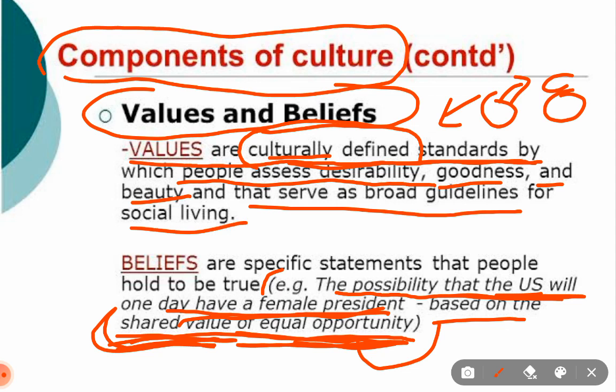So values are culturally defined standards by which people assess the desirability, goodness, and beauty, and that serve as broad guidelines for social living. In our example, what people consider desirable in United States society is that there should be equal opportunity. That is a shared value, and people consider it desirable.